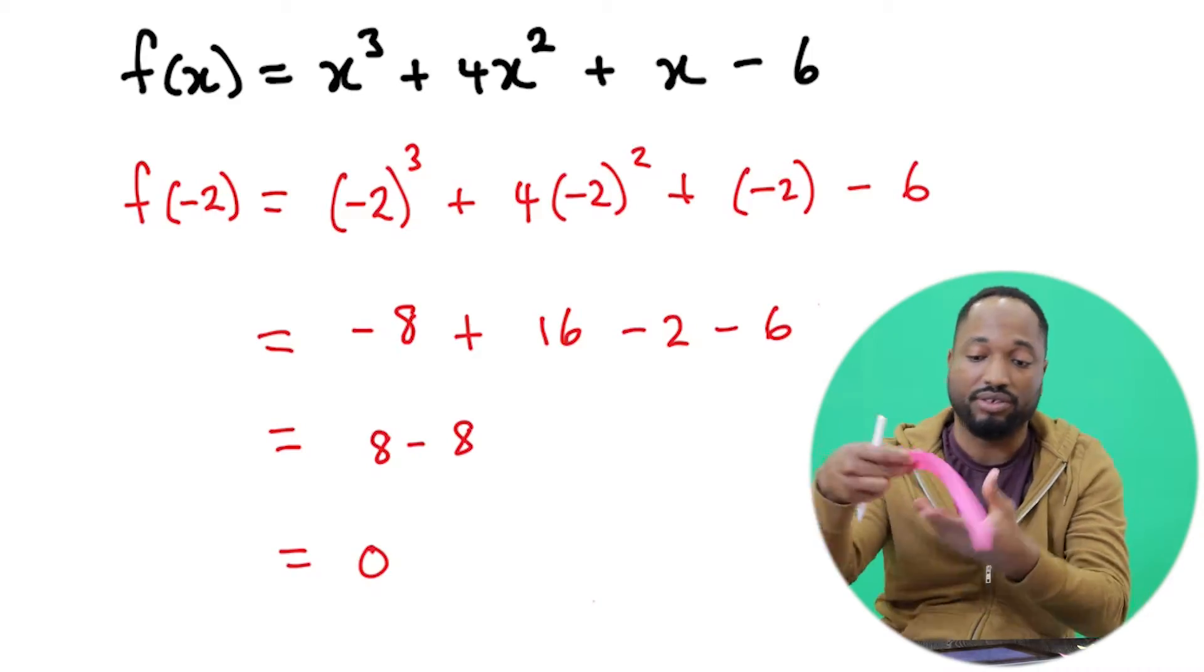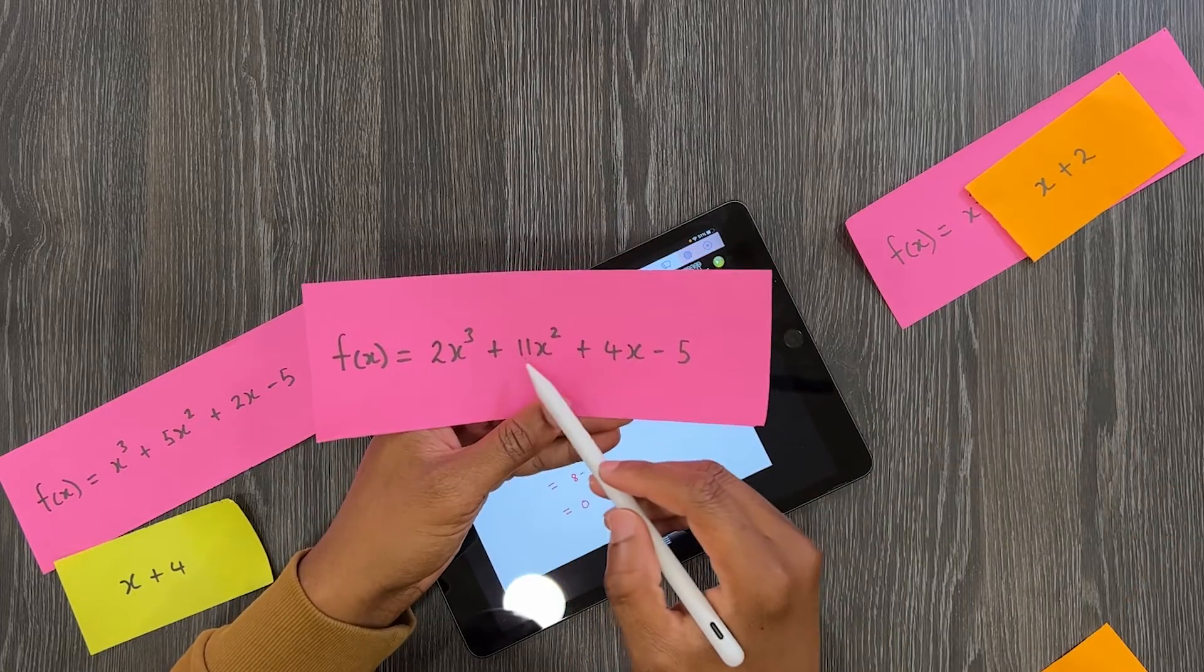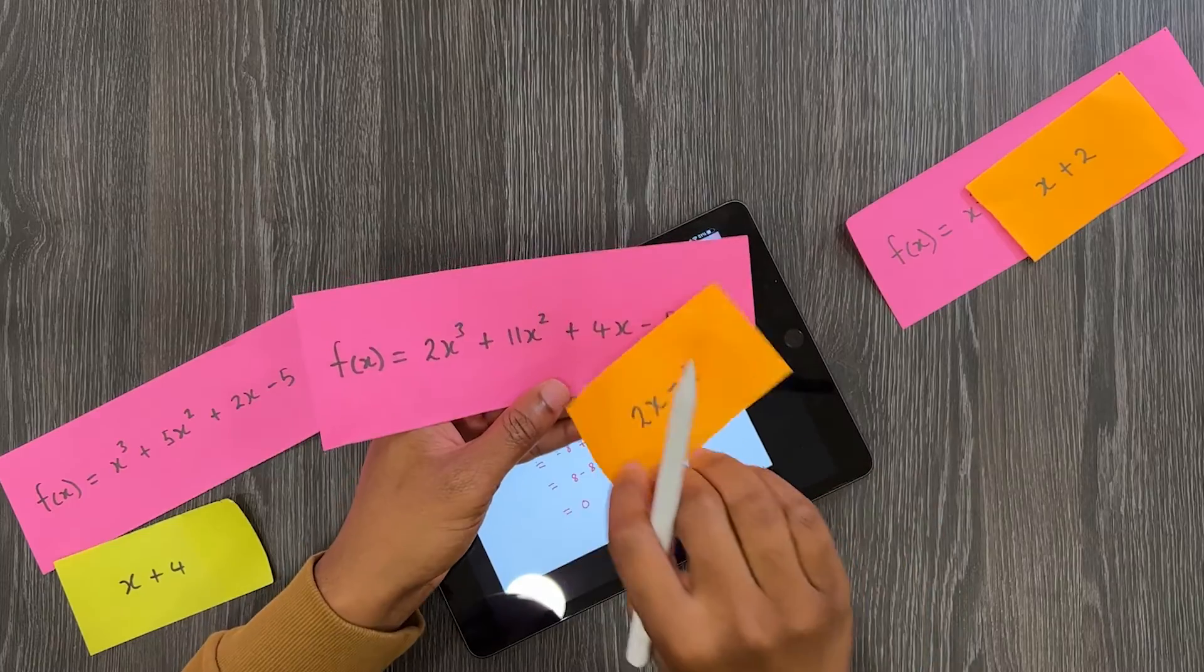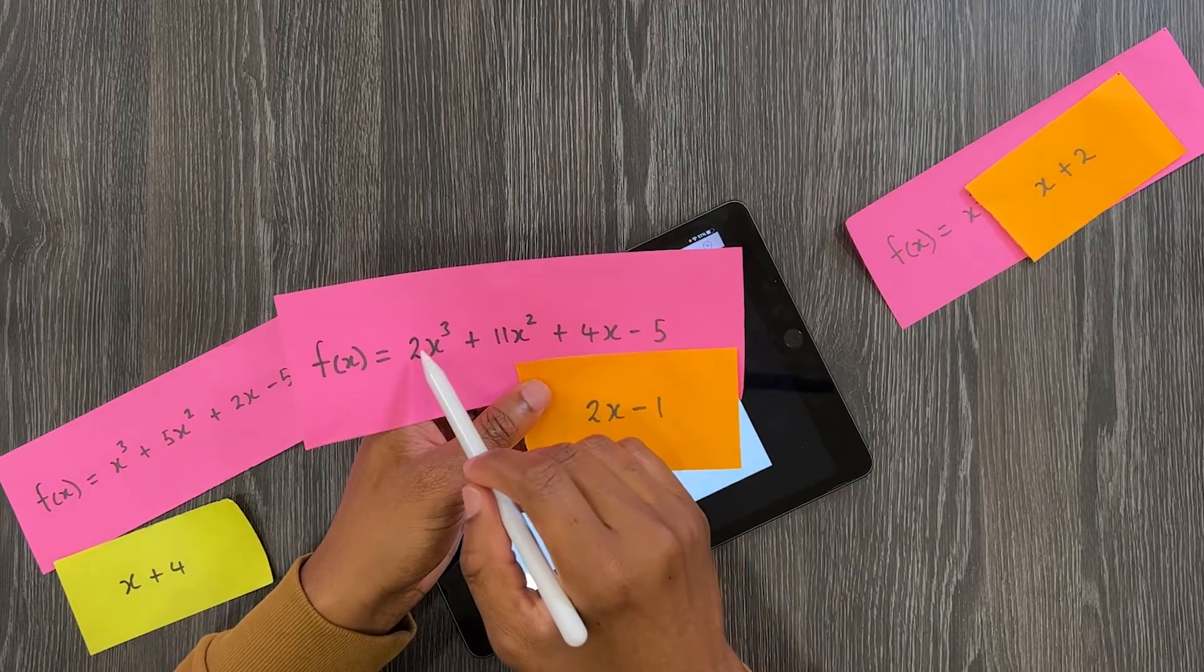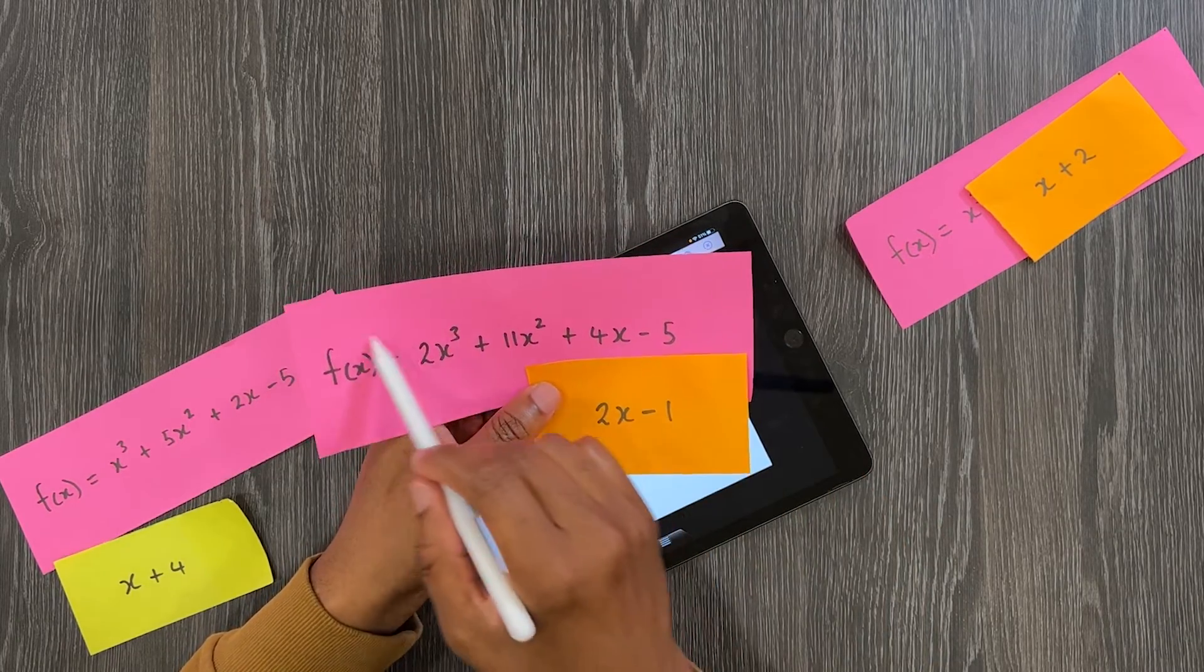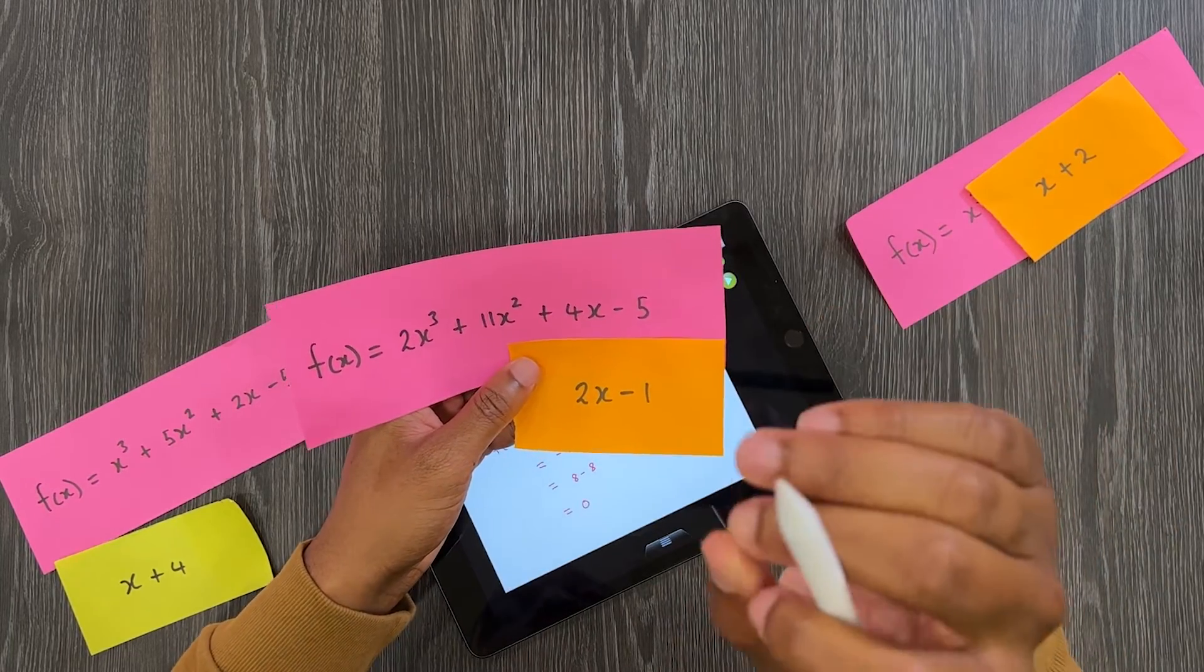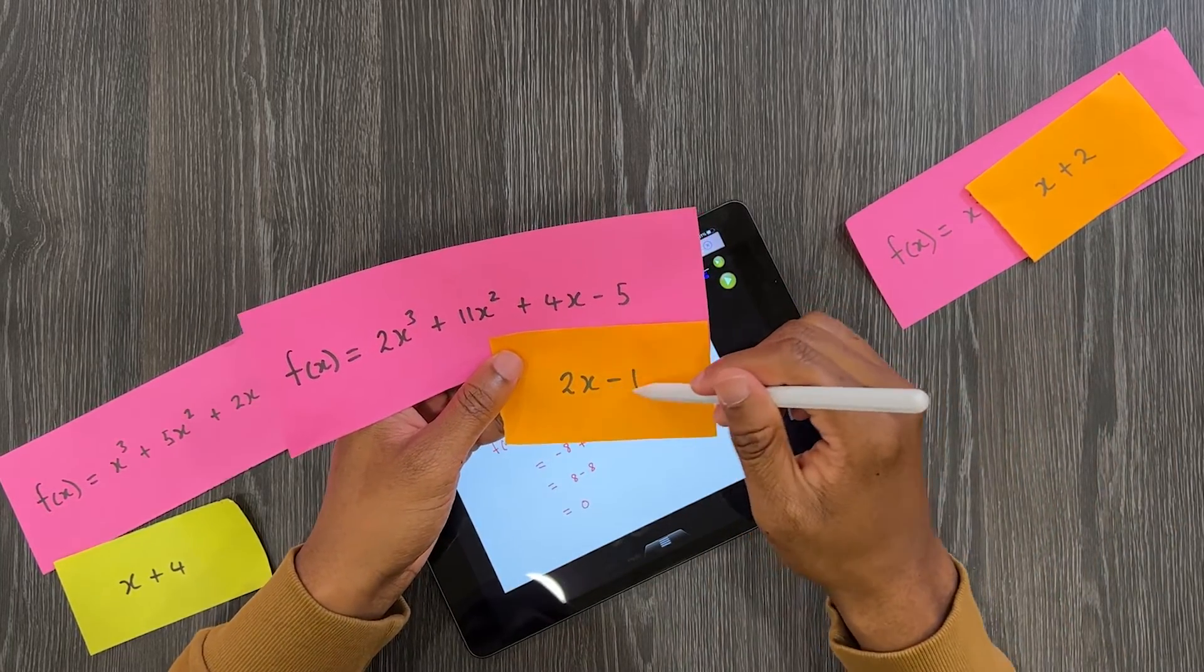Let's try another one. This is another polynomial: 2x³ + 11x² + 4x - 5. And we want to check to see if this is a factor. We want to see if this can be divided into this polynomial, this function, without leaving a remainder or with a remainder of zero.